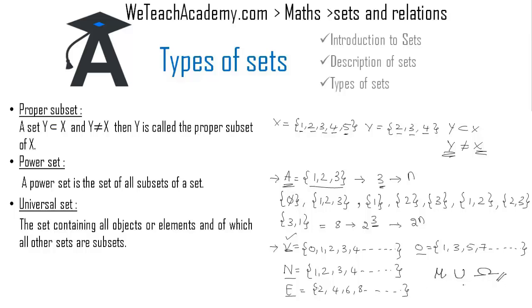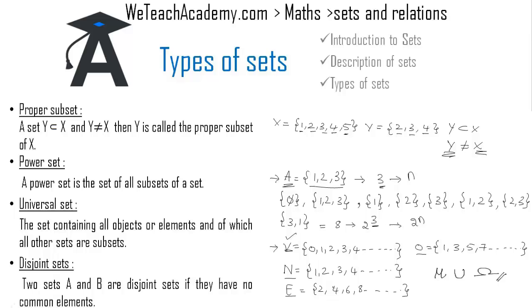Two sets A and B are called disjoint sets if they have no common elements. For example, consider the set of even numbers and the set of odd natural numbers. There are no common elements in both sets, so E ∩ O equals the null set, which is an empty set. We call such sets disjoint sets.